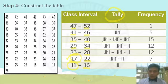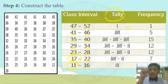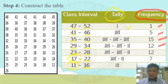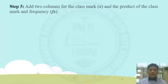After tallying, the frequencies are: 1, 5, 15, 12, 12, 7, and 3. Fifth step: add two columns — one for the class mark x, and one for the product fx (frequency times class mark).